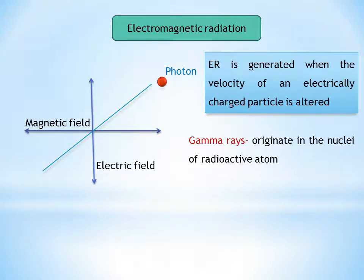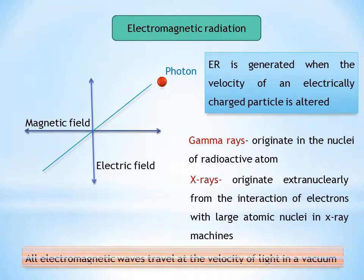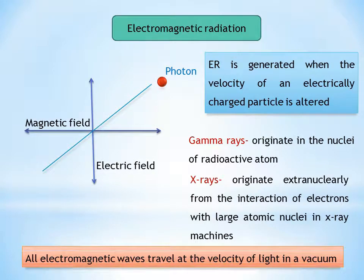Gamma rays originate in the nuclei of radioactive atoms. They typically have greater energy than do X-rays. X-rays in contrast are produced extranuclearly from the interaction of electrons with large atomic nuclei in X-ray machines. The types of radiation in the electromagnetic spectrum may be ionizing or non-ionizing depending on their energy.